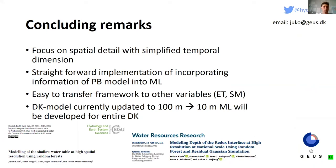This is my last slide. We focused on spatial detail here, and I'm fully aware this is a significant simplification of the temporal dimension — we hope to work on this in the future. This is a straightforward implementation of incorporating process-based model information into machine learning frameworks, and could easily transfer to other variables like ET or soil moisture. Currently we're updating our national model to 100 meters, and this fall and winter we will also produce a 10-meter random forest model covering the entire country. Thank you everyone.